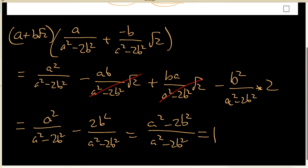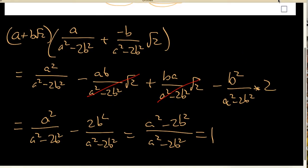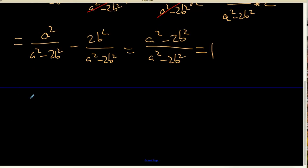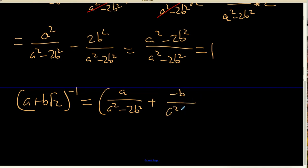And that is just a squared minus 2b squared over a squared minus 2b squared, which is a very fancy name for 1. So yes, we do have that a plus b times the square root of 2's multiplicative inverse can be given by a over a squared minus 2b squared plus minus b over a squared minus 2b squared times the square root of 2.